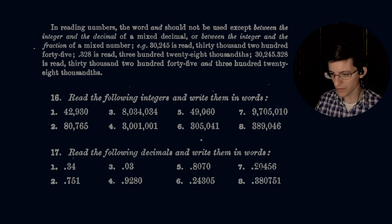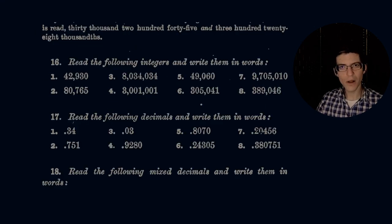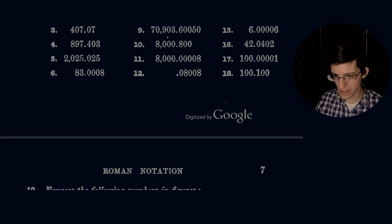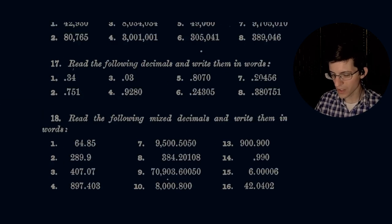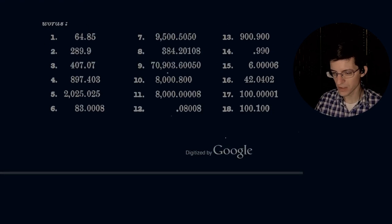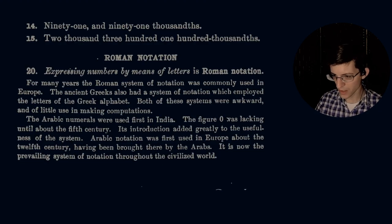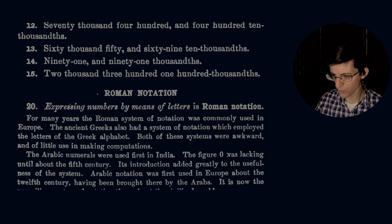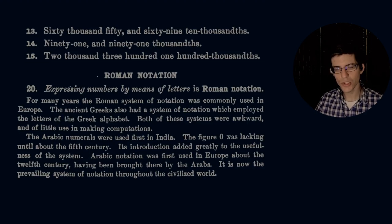Moving on to sixteen: read the following integers and write them as words. This is going to be a next video, a follow-up to this video, but that's pretty much the lesson in a nutshell. Express the following in figures. Each of these are going to be various activities. I'll probably make a very short video that reads out the project prompt and then each of those values will then be demonstrated. So, a little bit of homework or a follow-up video to this. And then Roman notation. Expressing numbers by means of letters in Roman notation. I think we're going to stop there for today. So next week we will pick up with Roman notation and move forward.